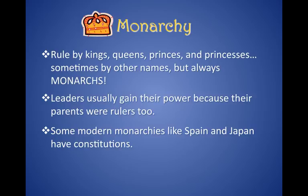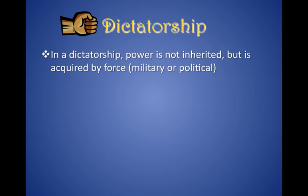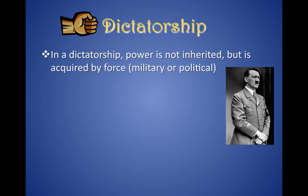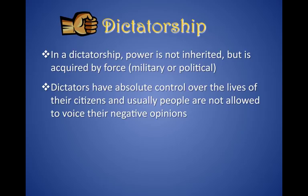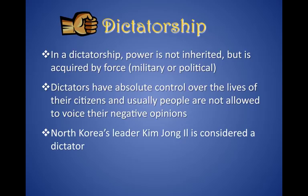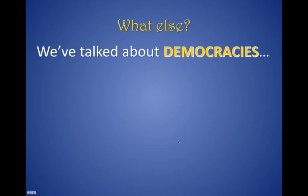The other form of autocracy is a dictatorship. In a dictatorship, power isn't inherited — it's acquired by force, either military or political. At the point of a gun, usually a dictator takes over power. Dictators have absolute control over the lives of their citizens, and people are usually not allowed to voice negative opinions against the dictator. One of the more famous examples would be Adolf Hitler of Germany during World War II. Today, North Korea's leader Kim Jong-il is considered a dictator, though his son has since taken over.